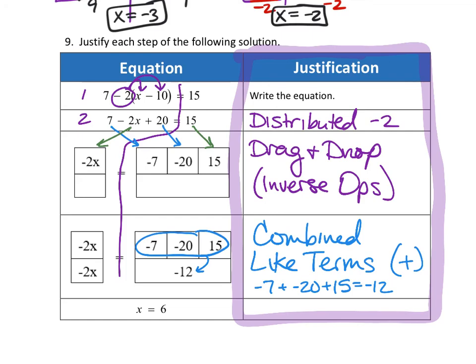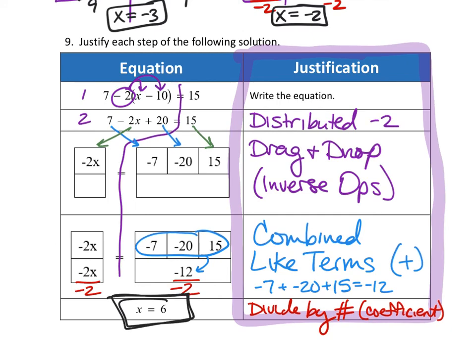Then in the very last step, how did they get down here to x equal 6? Yeah, they divided by the coefficient. So divide by the number in front of the variable, which is called the coefficient. This will get you your final solution, and so you would know how to check your work.